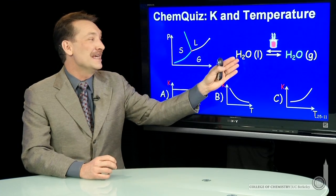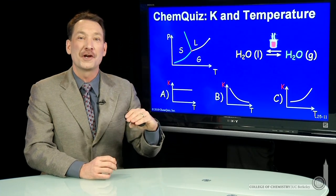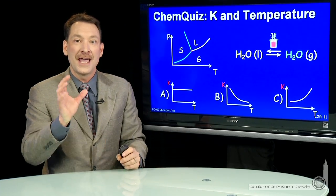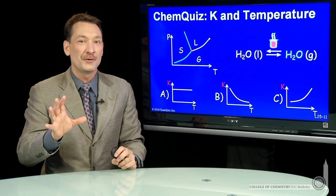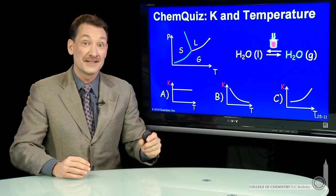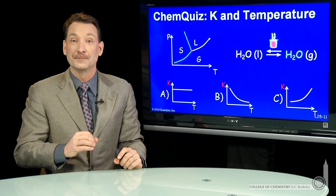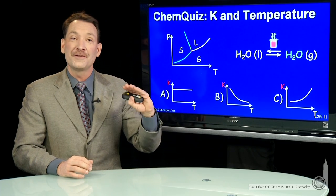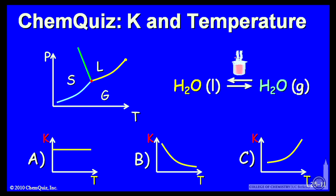We're talking about the equilibrium between water liquid and water gas at various temperatures. K, the equilibrium constant for chemical reactions and physical processes, varies with temperature. So how does it vary for this reaction? What we're interested in is the equilibrium of liquid water and gaseous water for every temperature. So actually,